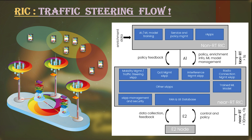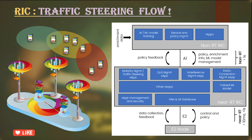Let's map these functions using a resource management example where users are connected through three different cells at three different locations, all connected to the same pool of OCU. One cell is highly utilized because it has more users actively using broadband services. Data is collected through the NMS (Network Management System), including PRB utilization, number of users attached, data in buffer, CC utilization, and number of users per TTI.